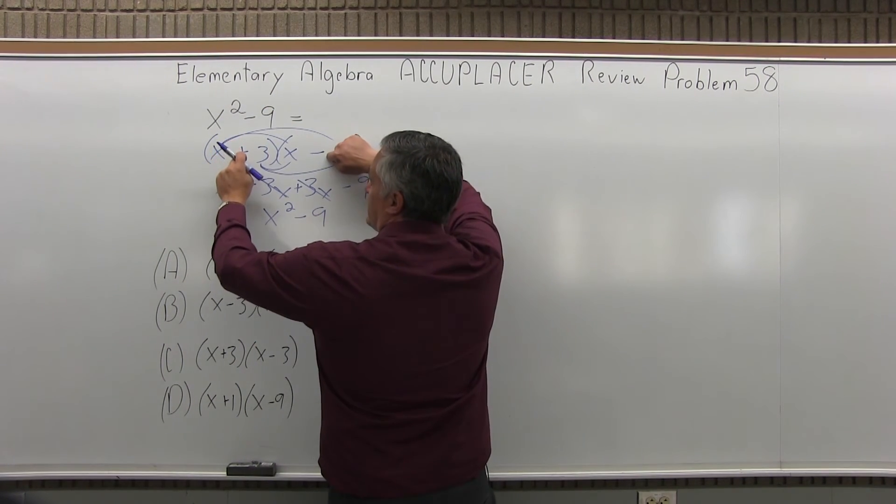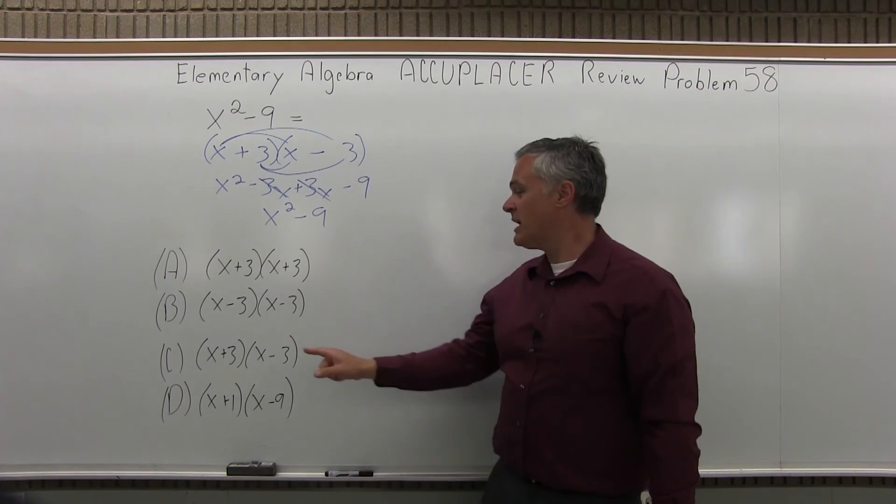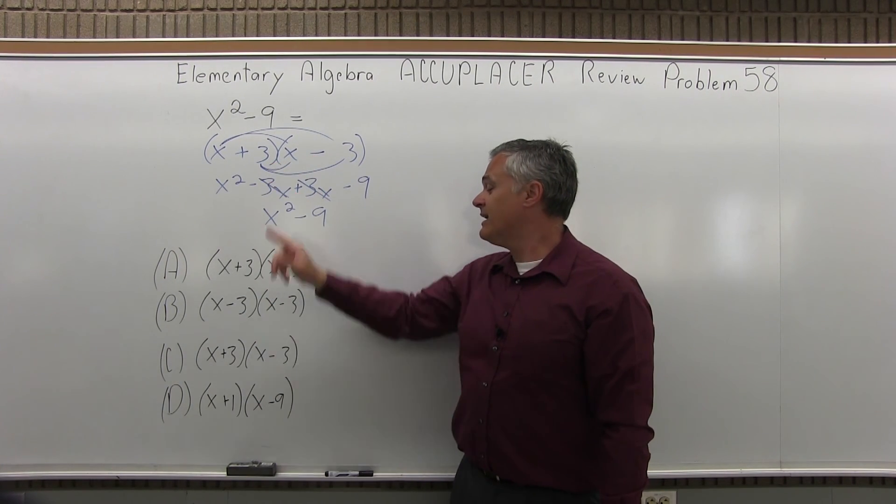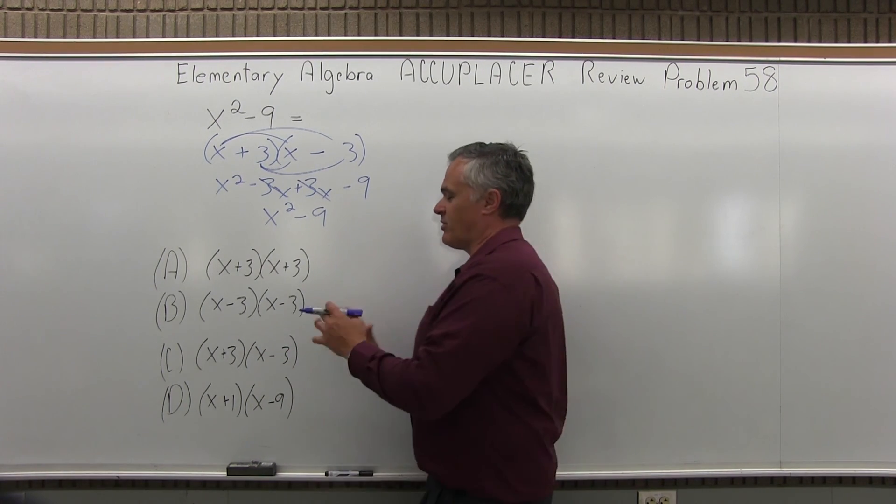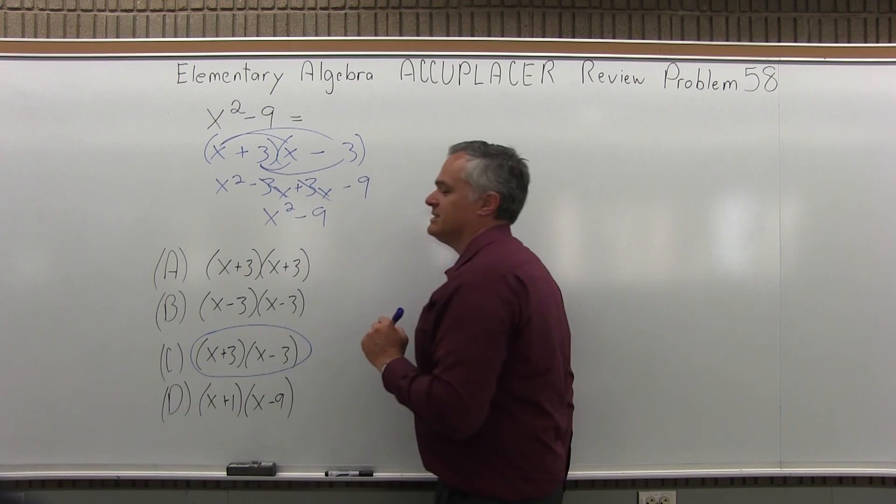So, I say the answer is x plus 3, x minus 3, and as I look through my answers, they're all kind of the same format, but option C is x plus 3, x minus 3, which is what I had, and you could do x minus 3 times x plus 3. That is the same thing. The order of the parentheses doesn't really matter, but the answer is option C.